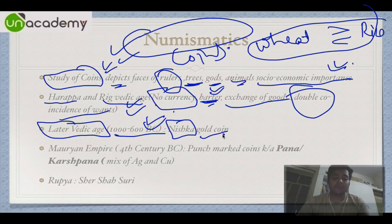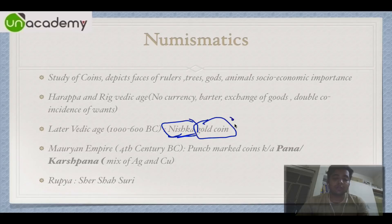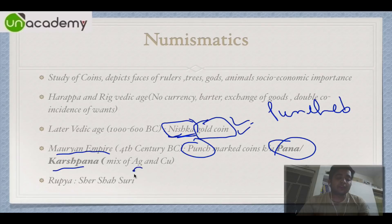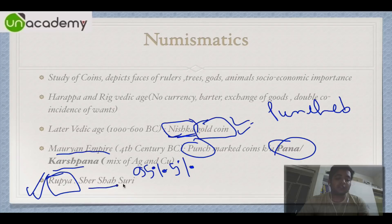In the Mauryan Empire, punch-marked coins were used — they were called Pana or Karshapana. These coins were a mixture of 95% silver and 5% copper. Finally, our modern currency, the Rupiah, was started by Sher Shah Suri in the 1540s.